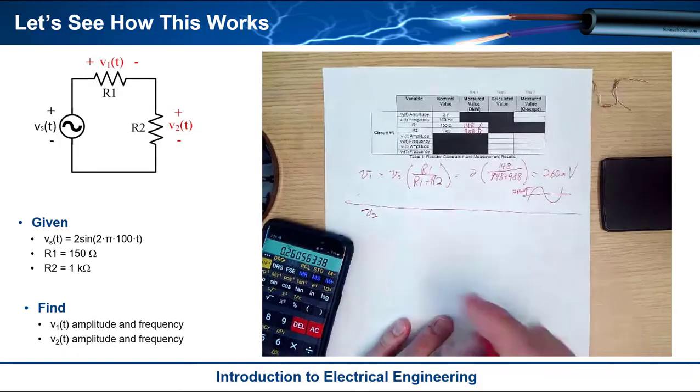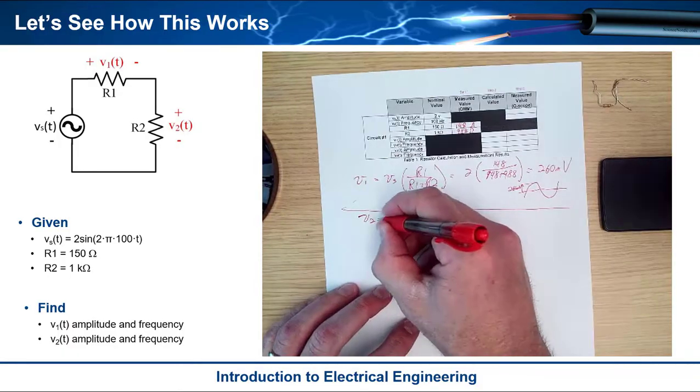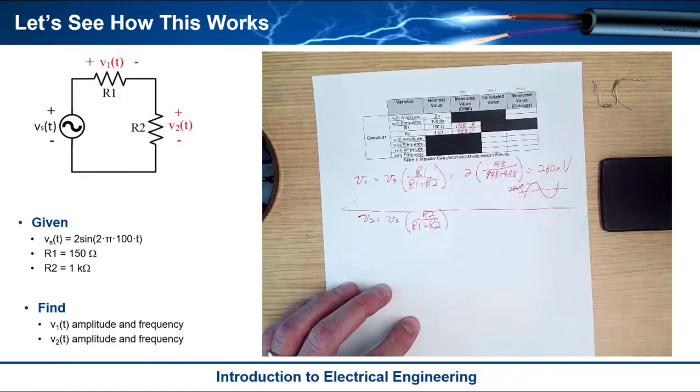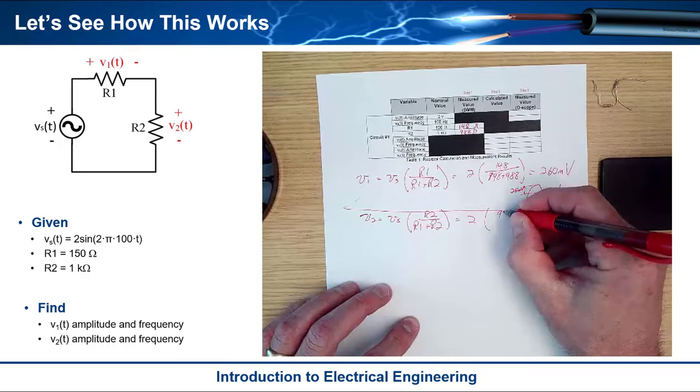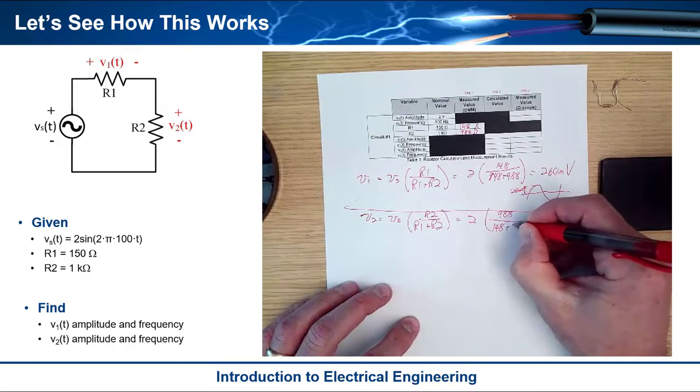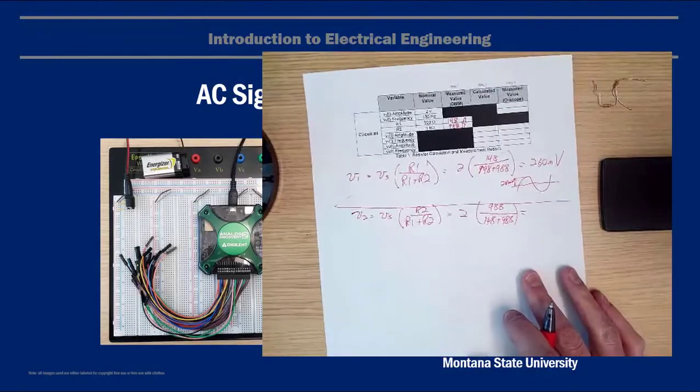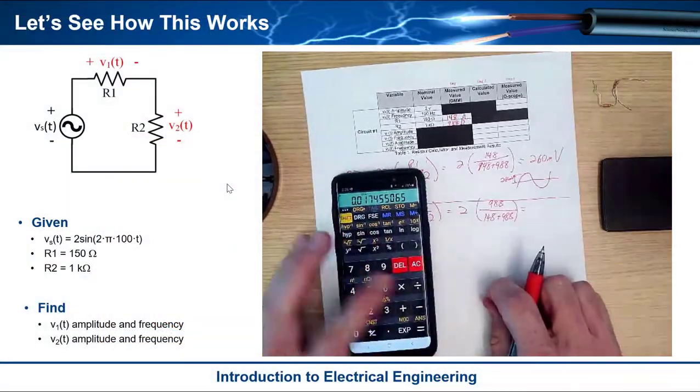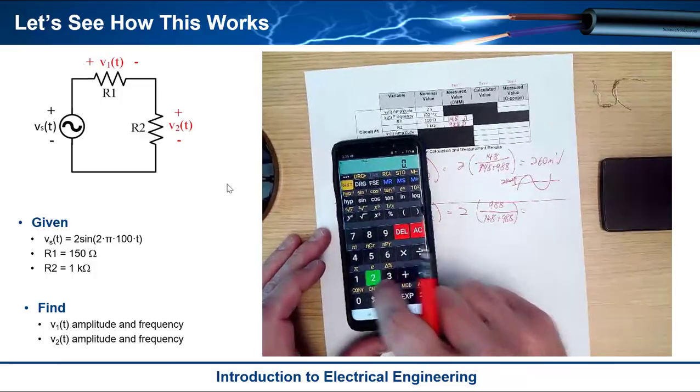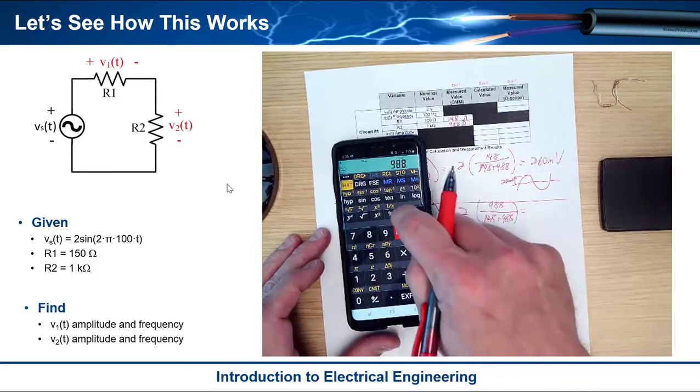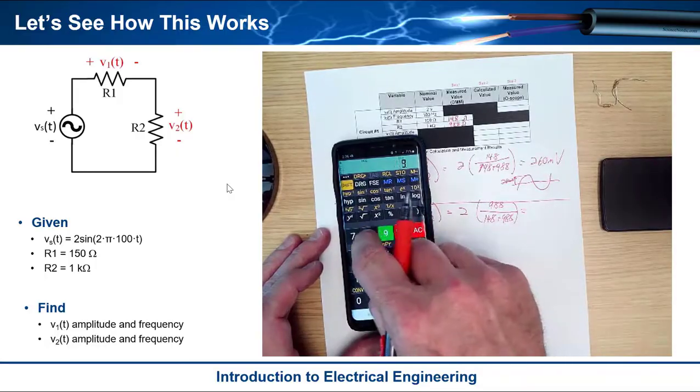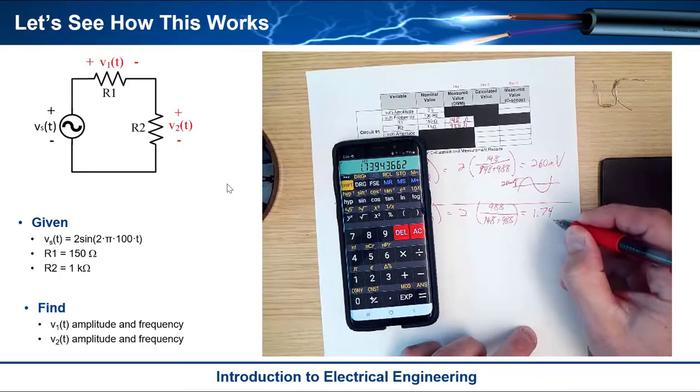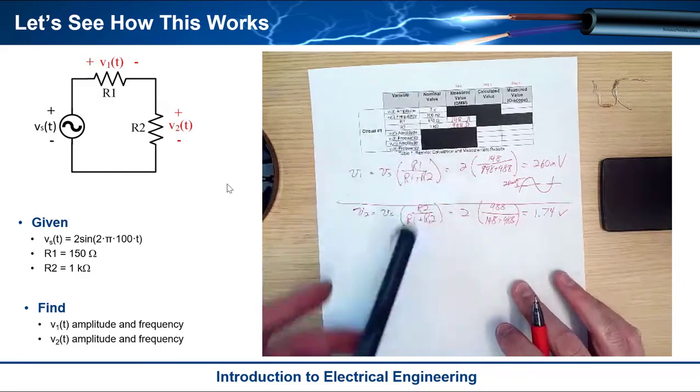Now let's do V2. We're going to use the voltage divider method again. I have VS, and I'm going to have R2 this time over R1 plus R2. I go ahead and pump in my values: 2 multiplied by 988 over 148 plus 988. I get 1.74 volts. Notice that if you added those two together, they'd be exactly 2 volts. That's KVL, right?